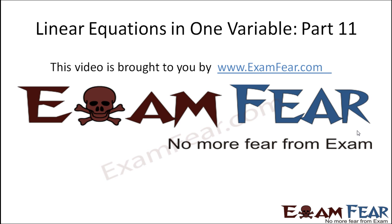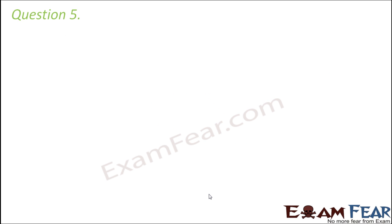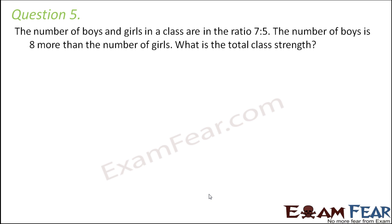This video on linear equations in one variable part 11 is brought to you by ExamFear.com — no more fear from exams. Question number 5: the number of boys and girls in a class are in the ratio 7 is to 5. The number of boys is 8 more than the number of girls. What is the total class strength? Whenever you are given a ratio, assume a multiplier of the ratio.